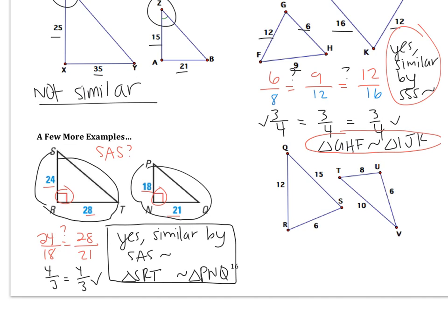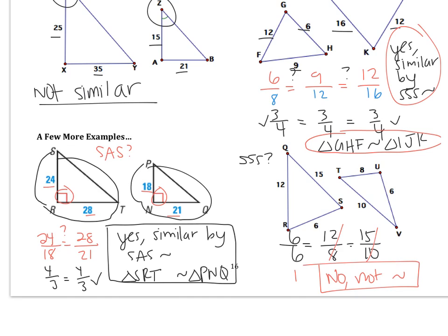Now let's look at the second example. This one looks like I might be using SSS because I have three pairs of sides. First triangle has sides 6, 12, and 15. Second triangle has smallest side 6, medium side 8, and largest side 10. Right away I notice the first ratio is 1, and the second two definitely are not 1. So no, these triangles are not similar — their sides are not proportional.